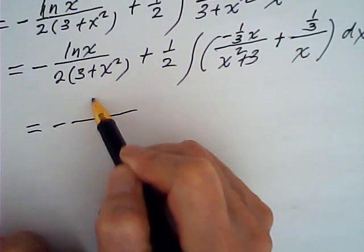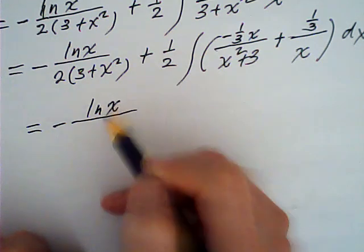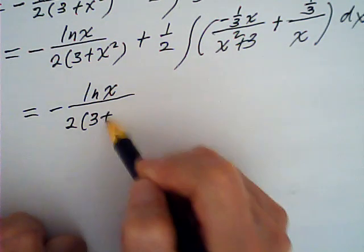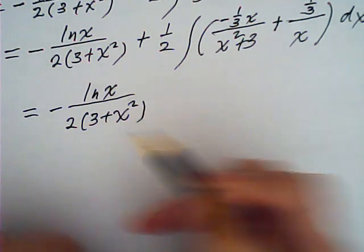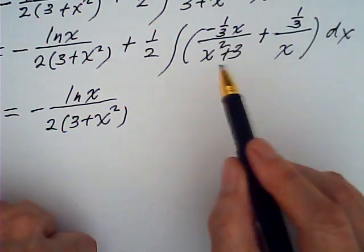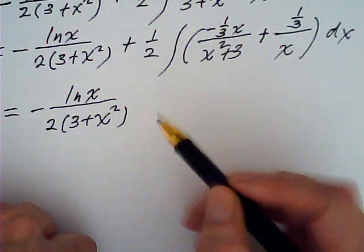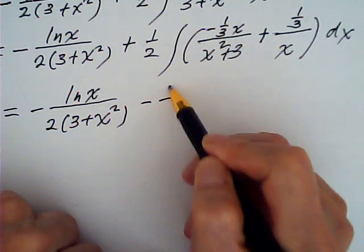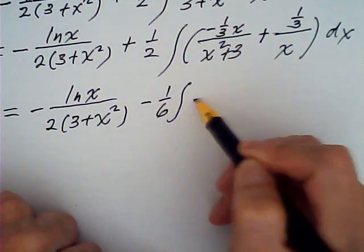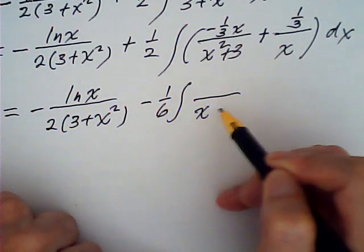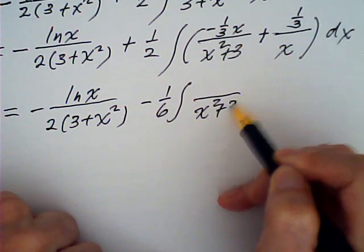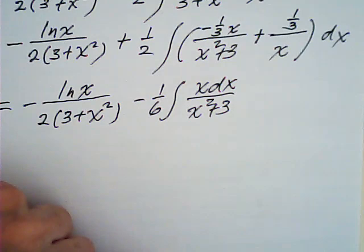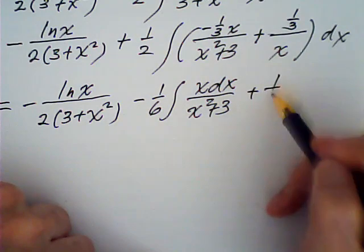Then this is going to be log x over 3 plus x squared, and then one third out. This is minus one sixth integral x squared plus 3 over x dx plus one over six dx over x.